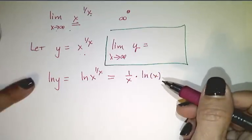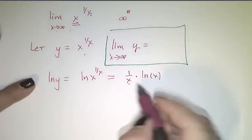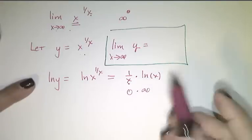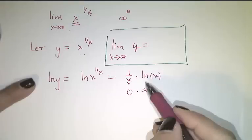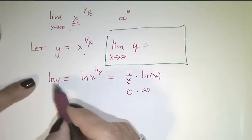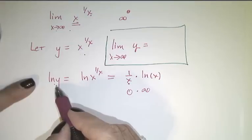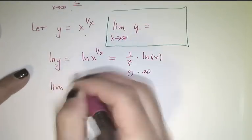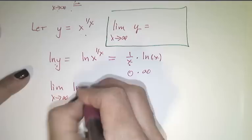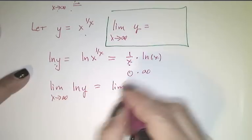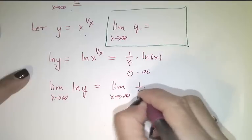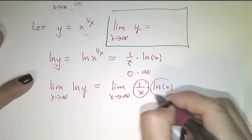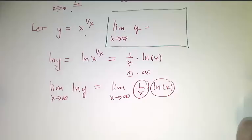Let's explore what happens as x goes to infinity of this product. 1 over x goes towards 0, and ln(x) goes towards infinity. So this is an indeterminate product, which I know how to handle. But this is not the limit of y — this is the limit of the natural log of y.